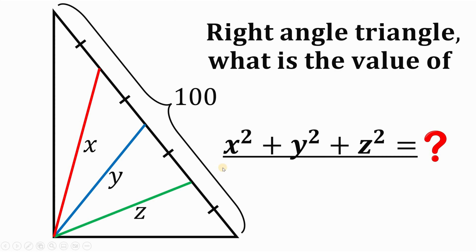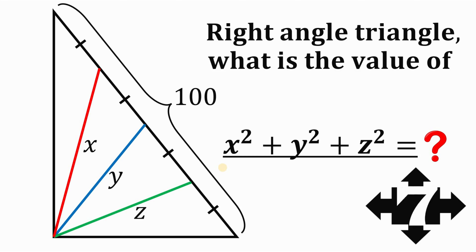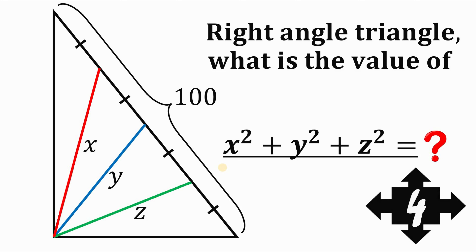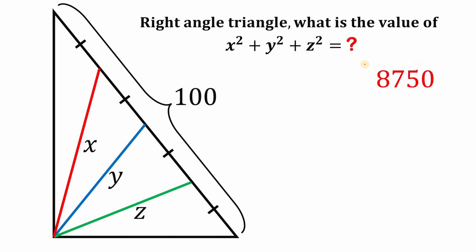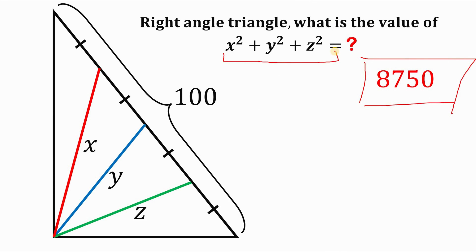You can pause this video if you want to give this problem a try. Now let's answer this question together. Before we move on to the solution, here is the answer to this question. The answer is 8,750 — that is the value of x squared plus y squared plus z squared.